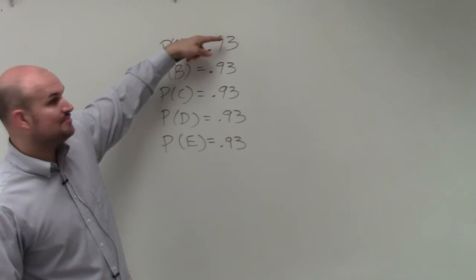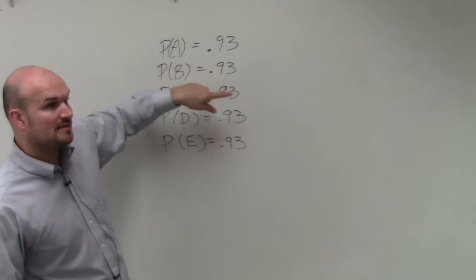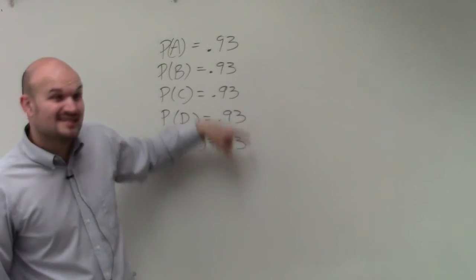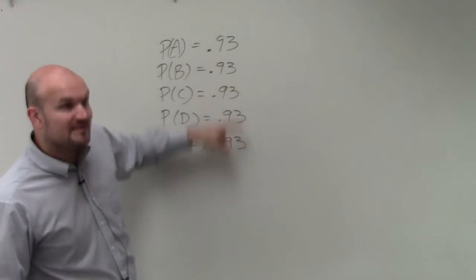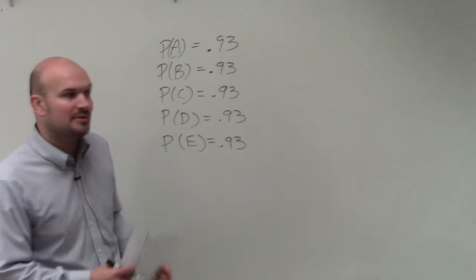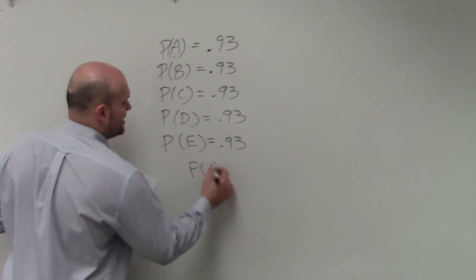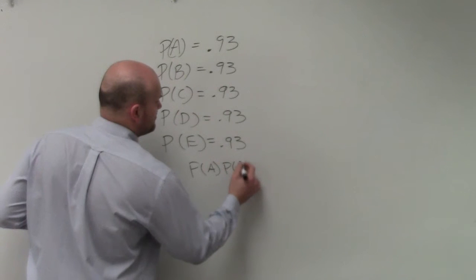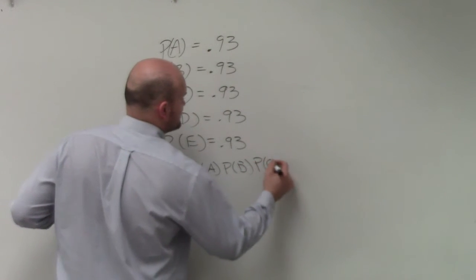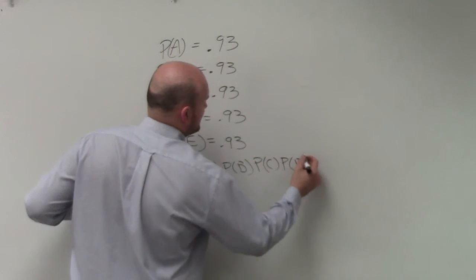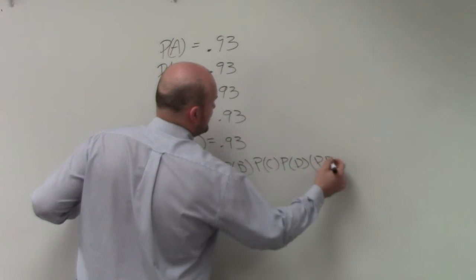So they're asking not only is this one going to pass, but will this part pass, this part, this part, this part, and this part, right? They're asking for all of them to be included to be able to pass. So what's the probability? So what we need to do is probability of A times the probability of B times the probability of C times the probability of D times the probability of E.